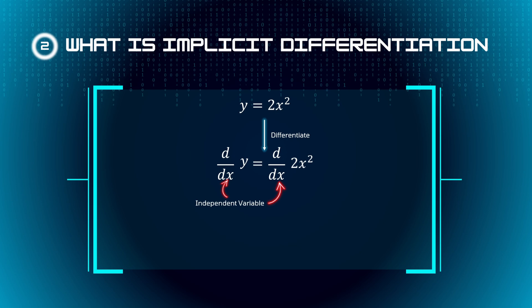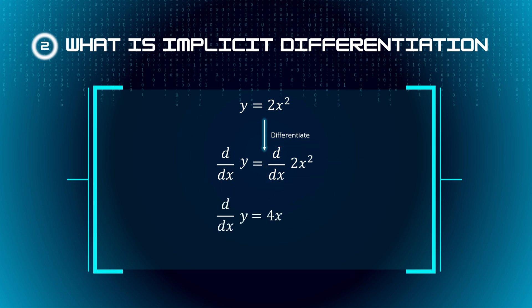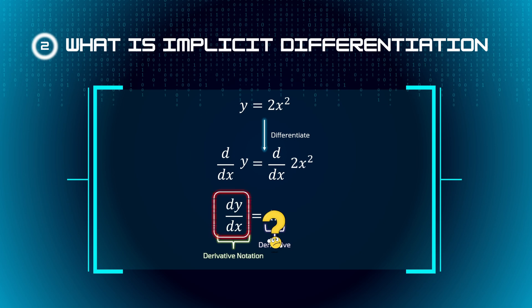There's not much we can do with the left-hand side d/dx of y, so we focus on the right-hand side, which we can easily differentiate using the power rule to get 4x. Note that 4x is the actual derivative, while d/dx of y is just the derivative notation. There are many different derivative notations that all represent the same thing. But here's the key: if, for whatever reason, we don't know what the derivative is, we can replace it with its derivative notation, since they're both equivalent. This little technique will play a big role when it comes to implicit differentiation.